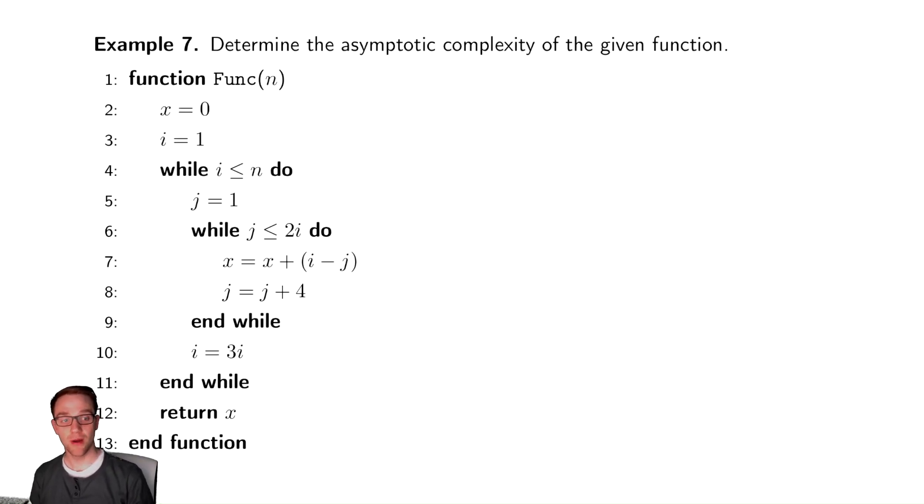In our previous video, we saw how we can analyze a while loop where the cost inside isn't constant. In that case, we had a for loop embedded inside of a while loop. Here we have a while loop embedded inside of a while loop.